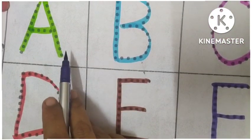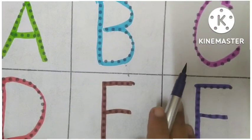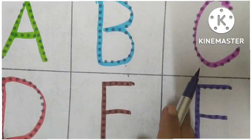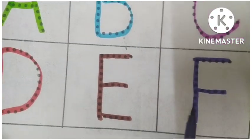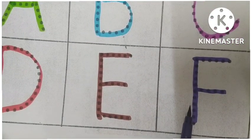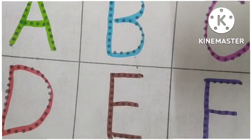Green color, Blue color, Pink color, Red color, Brown color, Purple color. C for cat, B for banana.